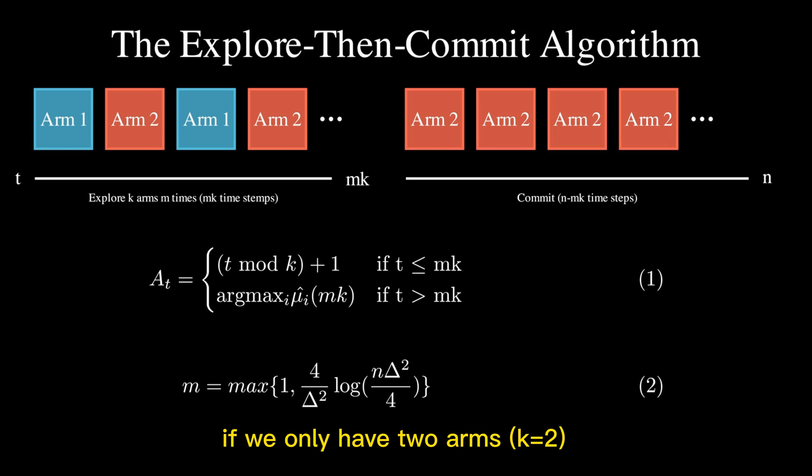If we only have two arms, k equals 2, then it is best to choose m as the max of 1 or this other term, which is a function of Δ, the mean difference between two arms, and n, the total number of rounds. So that is the ETC algorithm for a multi-armed bandit problem.